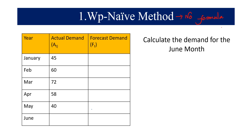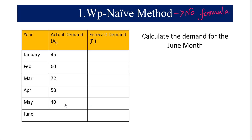No formula will be used for the naive method — this is extremely simple to calculate and one of the most basic methods. We are given year-wise data and the actual demand. They are asking us to find out what will be the forecast for the month of June. Whenever we work with any forecasting technique, we always leave the first forecasted demand empty because we do not have any previous data.